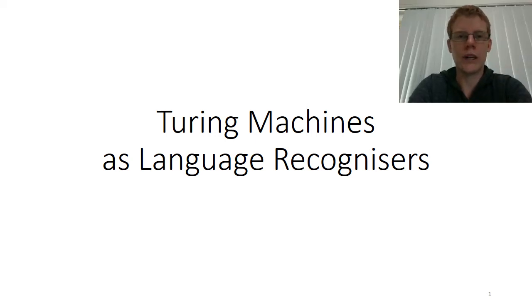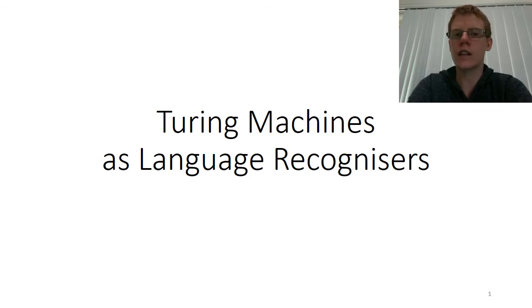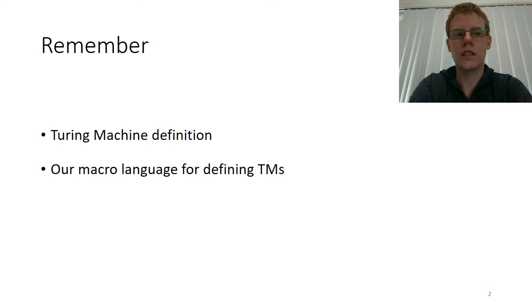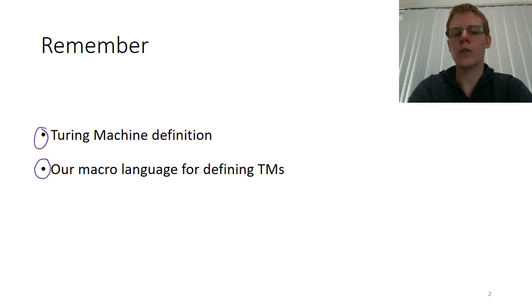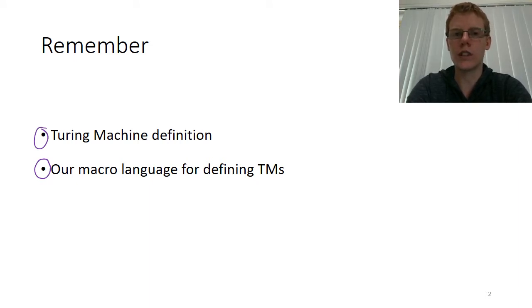In this video, we're going to talk about Turing machines and how we can use them to recognize languages — how we can use them to decide whether or not a particular string is in a language, just like we did with finite state machines and pushdown automata. All you will need is an understanding of the Turing machine definition and familiarity with the macro language we've talked about in class.